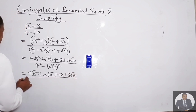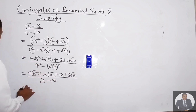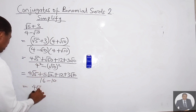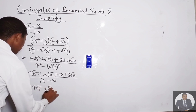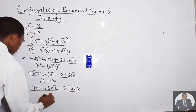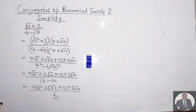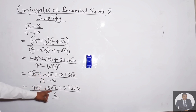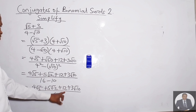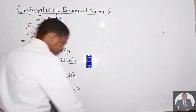The denominator is 4 squared minus (√10) squared, which is 16 minus 10, giving us 6. So the final answer is (4√5 + 5√2 + 12 + 3√10) all over 6.